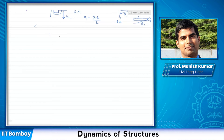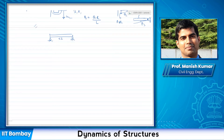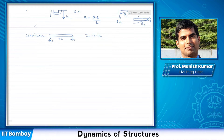How about I have a simply supported beam here? This beam is deformable — EI is the modulus of rigidity of this beam. How many degrees of freedom would this continuous beam have? It would have infinite degrees of freedom. A continuous system would have infinite degrees of freedom.